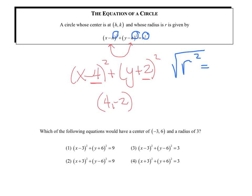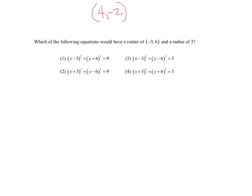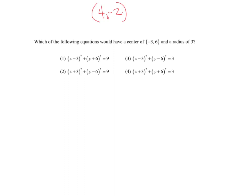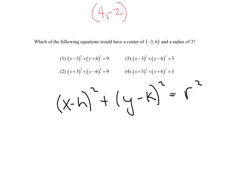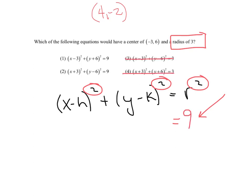Let's look at a sample question: which of the following could have a center of negative 3, 6, and a radius of 3? Starting from x minus h squared plus y minus k squared equals r squared — everybody's squared. So if my radius is 3, I'm not putting 3 there, I'm putting 9, which eliminates choices 3 and 4. And recall, we want the opposite, so this should be x plus 3 squared plus y minus 6 squared, giving us choice 2.